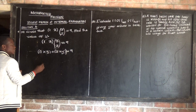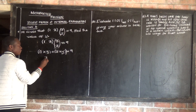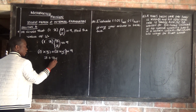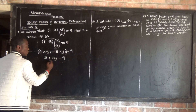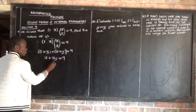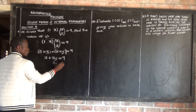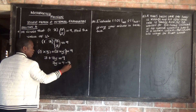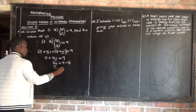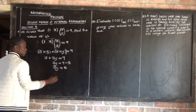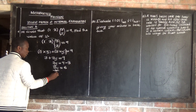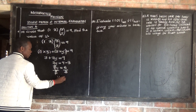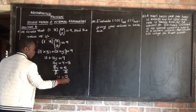So what is 1 times 3? We get 3. So 3 plus 3y is equal to 9. We solve this as an equation by collecting like terms. So 3y is equal to 9 minus 3, which gives us 6. To find y, we divide both sides by 3. So 3y divided by 3, and 6 divided by 3. The y is equal to 2. So the value of y is positive 2.